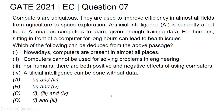This is GATE 2021 Electronics and Communication Engineering question number seven. Computers are ubiquitous — they are used to improve efficiency in almost all fields, from agriculture to space exploration. Artificial intelligence (AI) is currently a hot topic. AI enables computers to learn given enough training data.